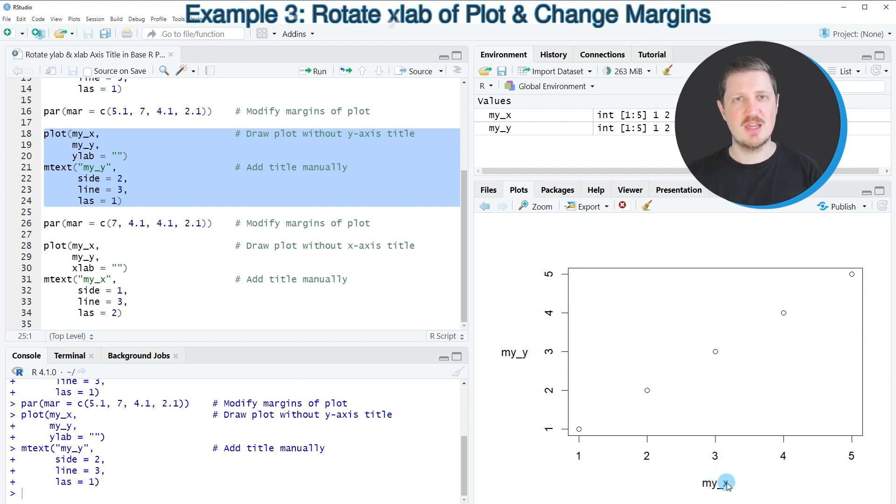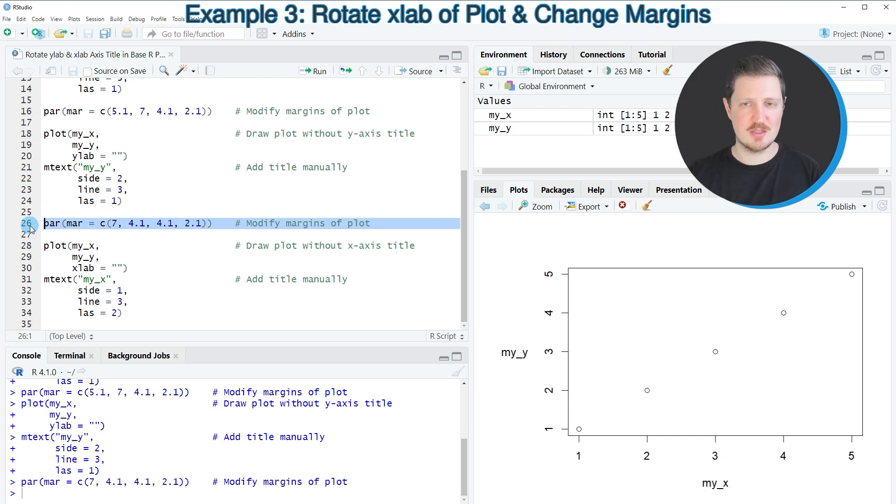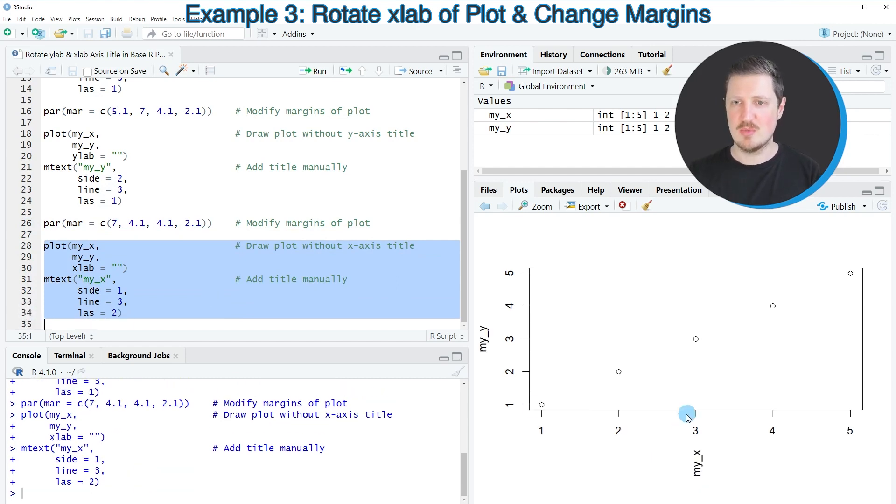It's also possible to rotate the x-axis title, as shown in the next example starting in line 26. We specify the par options before rotating our labels so the x-axis space is increased. We specify the value 7 at the first position of the ma argument and set the second position to 4.1, the default specification. After running lines 28 to 34, we have increased the space at the bottom and rotated our x-axis title.